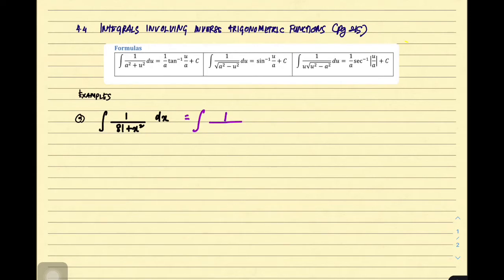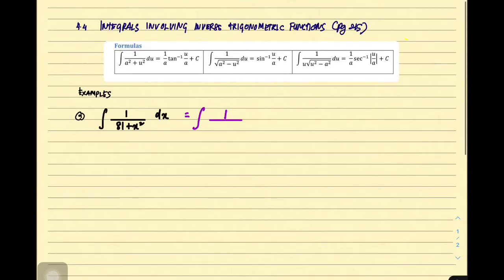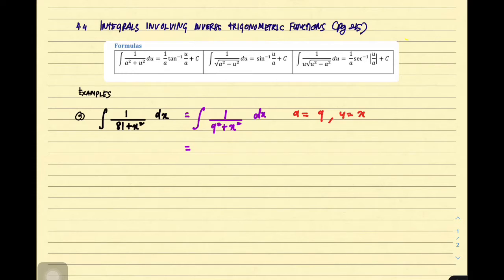This is equivalent to: we need to change our denominator in terms of a squared plus u squared. Therefore, 81 can be rewritten as 9 squared, giving us 9 squared plus x squared dx. So our a is equivalent to 9 and our u is equivalent to x. Applying this formula gives 1 over a, which is 1 over 9, times tangent inverse of u over a, so x over 9, plus c. This is your final answer.